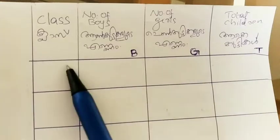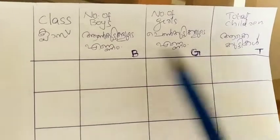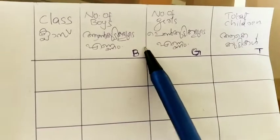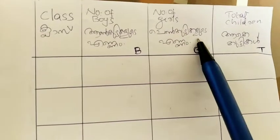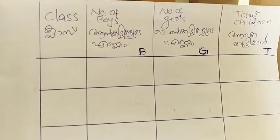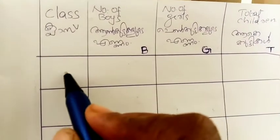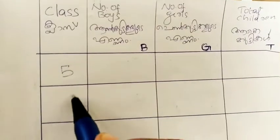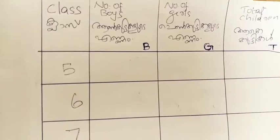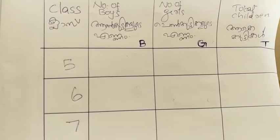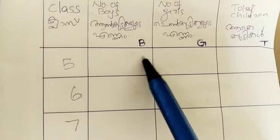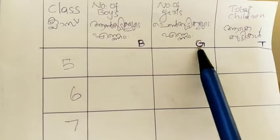We have a table with 4 columns: class, number of boys, and number of girls, total children. We have a class in UPS school.